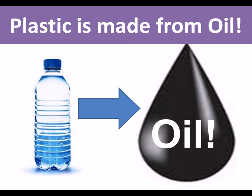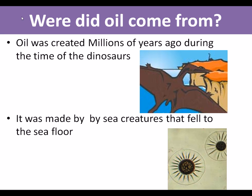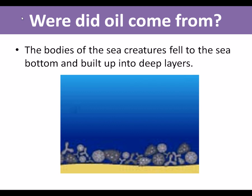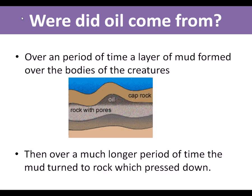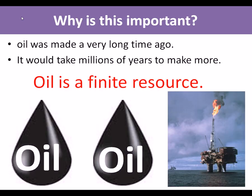Where did oil come from? We need to understand this — this is fundamental with plastics. Oil was created millions of years ago in the time of the dinosaurs. It was sea creatures and plants that fell to the sea floor; the bodies built up into layers, rock formed over them, and the pressure turned it into oil. This was a one-off thing, so oil was made a long time ago and it would take millions of years to make more.